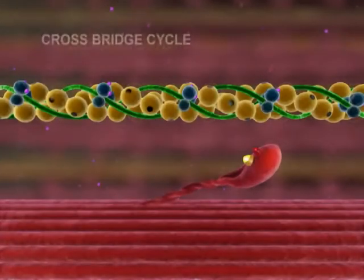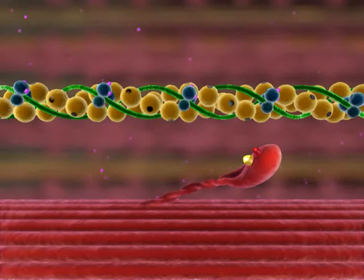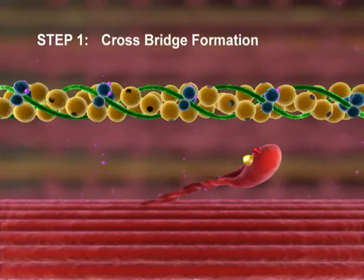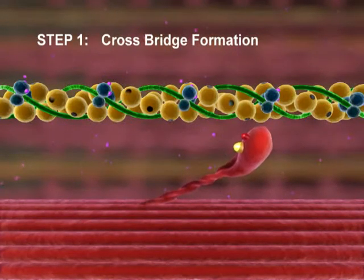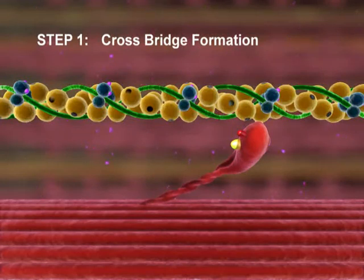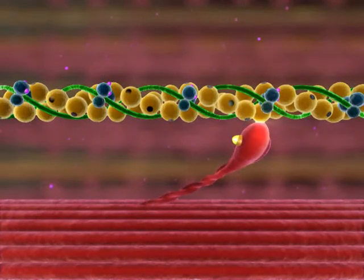A crossbridge cycle may be divided into four steps. Step 1: Crossbridge Formation. The activated myosin head binds to actin, forming a crossbridge. Inorganic phosphate is released, and the bond between myosin and actin becomes stronger.